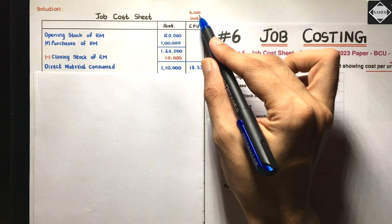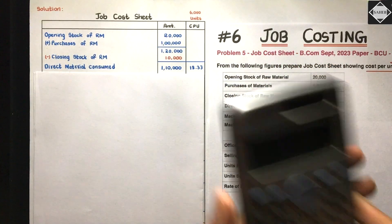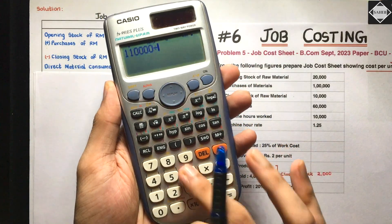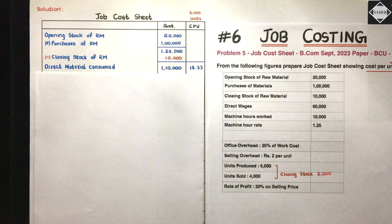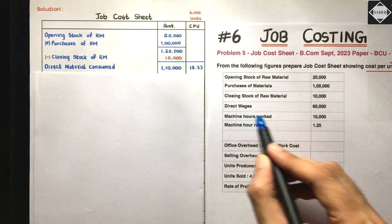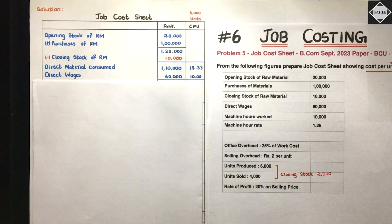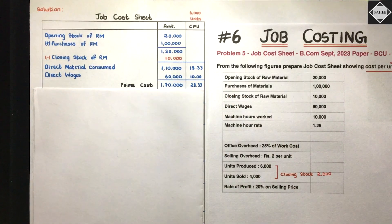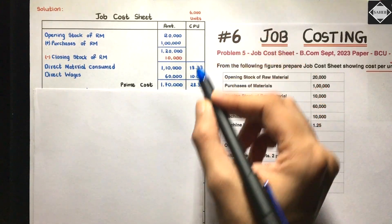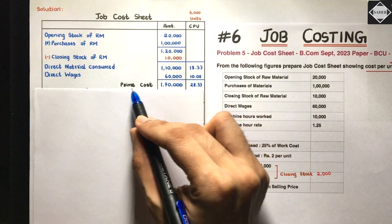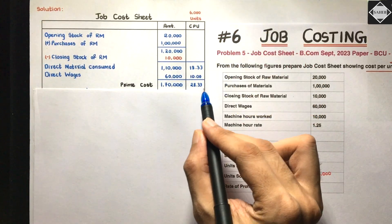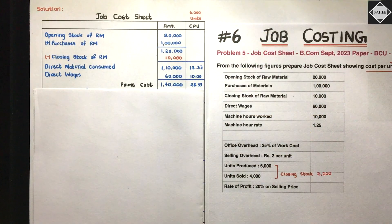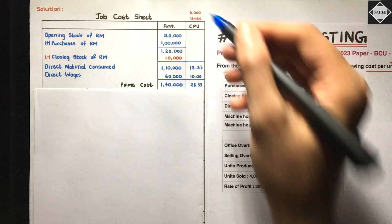CPU for direct material: 1,10,000 divided by 6000 units equals 18.33. After that we take direct wages — 60,000. So 1,10,000 plus 60,000 equals 1,70,000 prime cost. CPU for direct wages is 60,000 divided by 6000 equals 10 rupees. Prime cost CPU is 1,70,000 divided by 6000 equals 28.33. The units used are 6000 because the question states 6000 units have been produced.